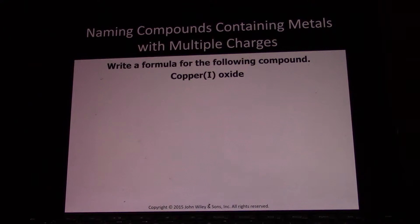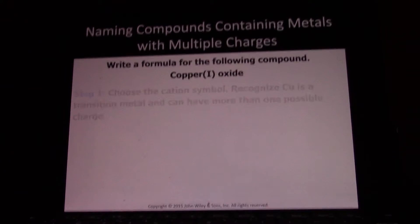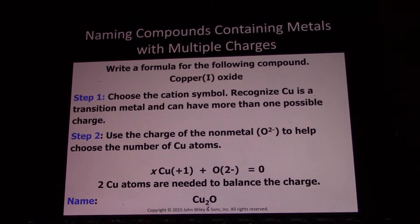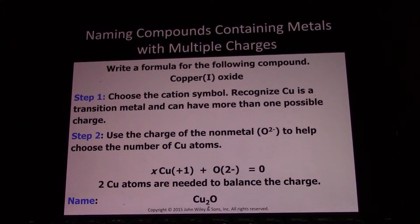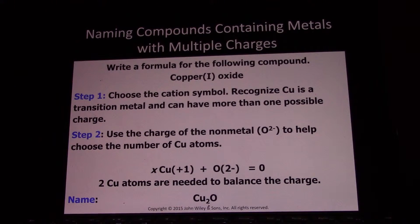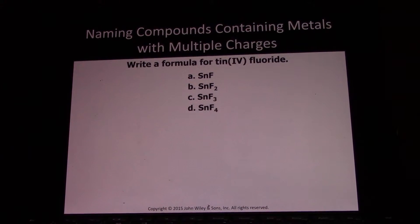Copper one oxide: oxide is negative two, and this copper is plus one. We need two coppers and one oxygen — Cu2O. Whereas copper two oxide would just be CuO, a one-to-one ratio. In this case, copper one is only plus one, so we need two positive ones to neutralize the negative two. For tin four fluoride, fluoride is negative one, and you need four of them to neutralize the positive four tin.